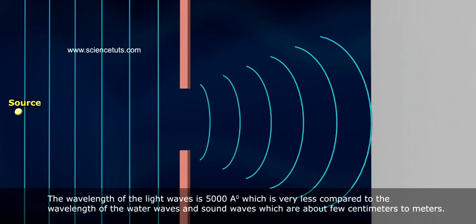The wavelength of light waves is 5000 angstrom, which is much less compared to the wavelength of water waves and sound waves, which are about a few centimeters to meters.